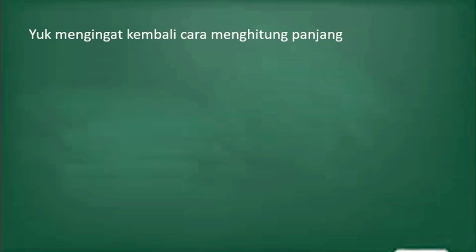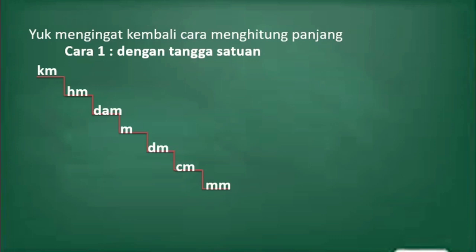Kita ingat kembali cara menghitung panjang. Cara yang pertama ialah dengan tangga satuan yang tadi sudah kita nyanyikan. Setiap turun satu tangga berarti dikalikan dengan 10 dan kelipatannya. Setiap naik satu tangga berarti dibagi dengan 10 dan kelipatannya. Contoh: satu kilometer berapa meter? Dari kilometer ke meter turun tiga tangga, berarti dikalikan dengan seribu, menjadi seribu meter.